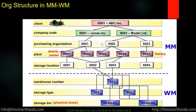Starting from the next videos, we will customize the following structure. On the top we have a company code, which is linked to a client. Under the company code we have purchasing org, and under purchasing org we have different plants. Under plant we have a storage location — up to here is the MM area. Underneath is the WM area: under a storage location we link a warehouse number, under the warehouse we have storage types, under storage types we have storage sections, and under storage sections we have different bins.